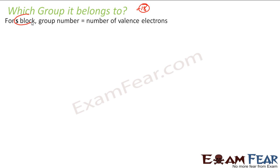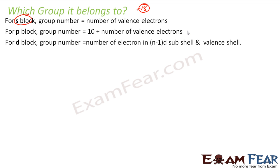First find the block it belongs to. If it is s block then the group number is nothing but the number of valence electrons. If it is p block then you find the number of valence electrons and then you add 10 to it. If it is d block then you find the number of electrons in n minus 1 d subshell and also the outermost valence subshell. You add this and whatever you get is a group number. If it is f block there is no group number for f block.